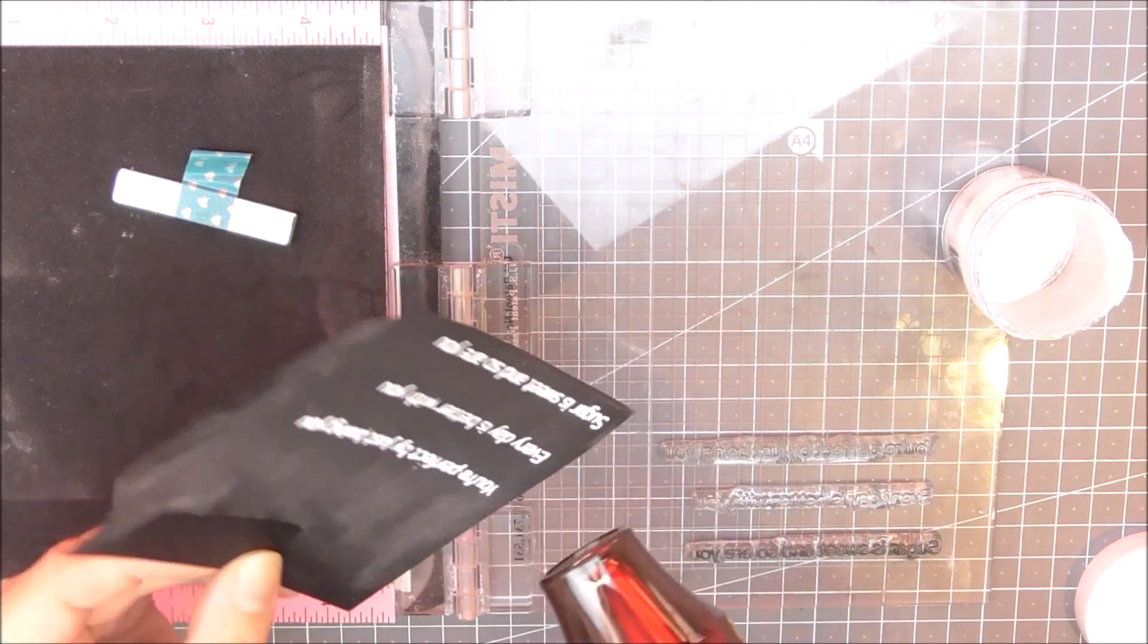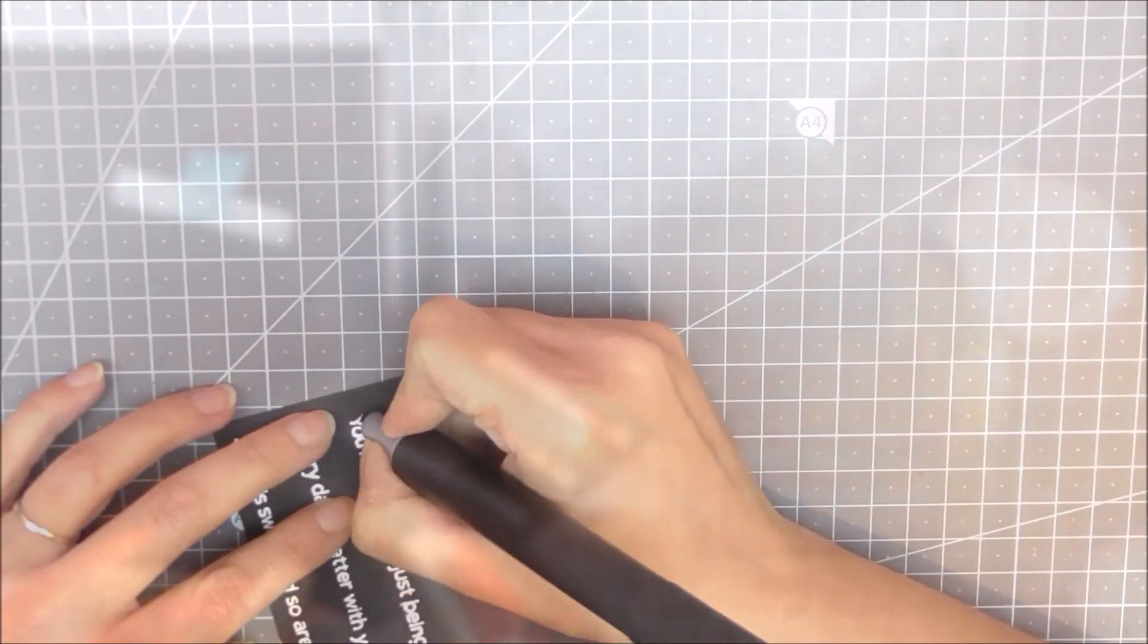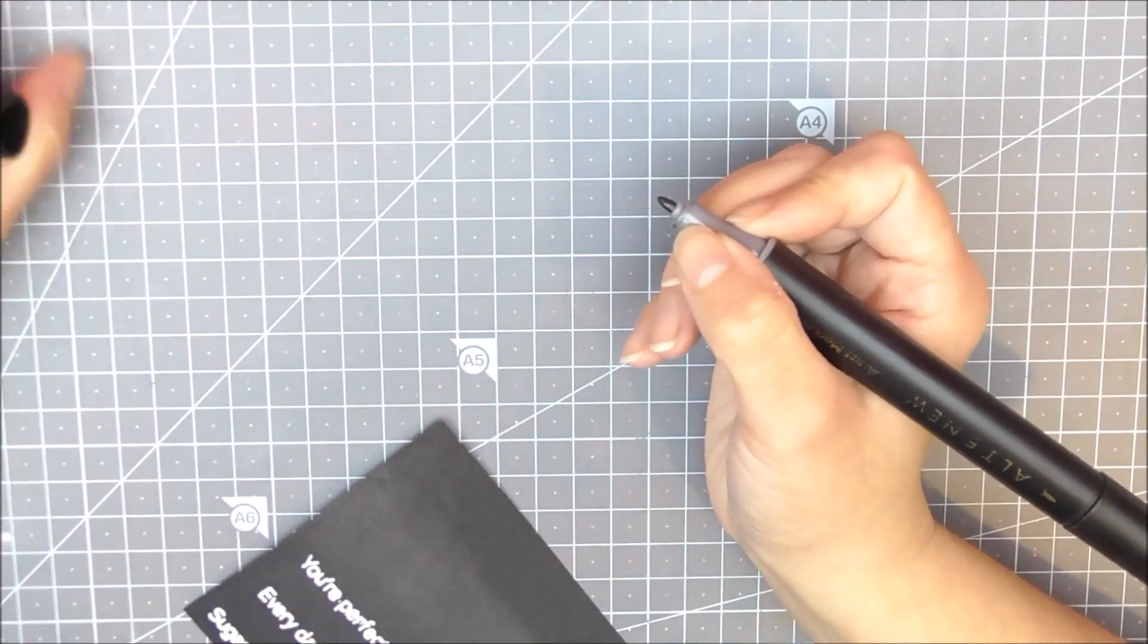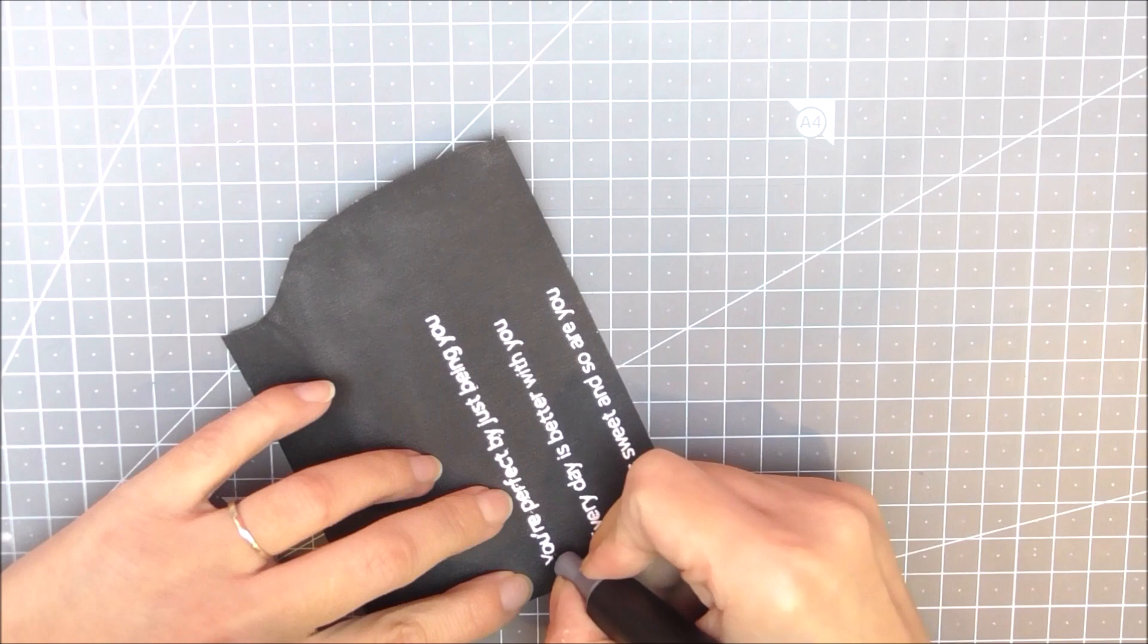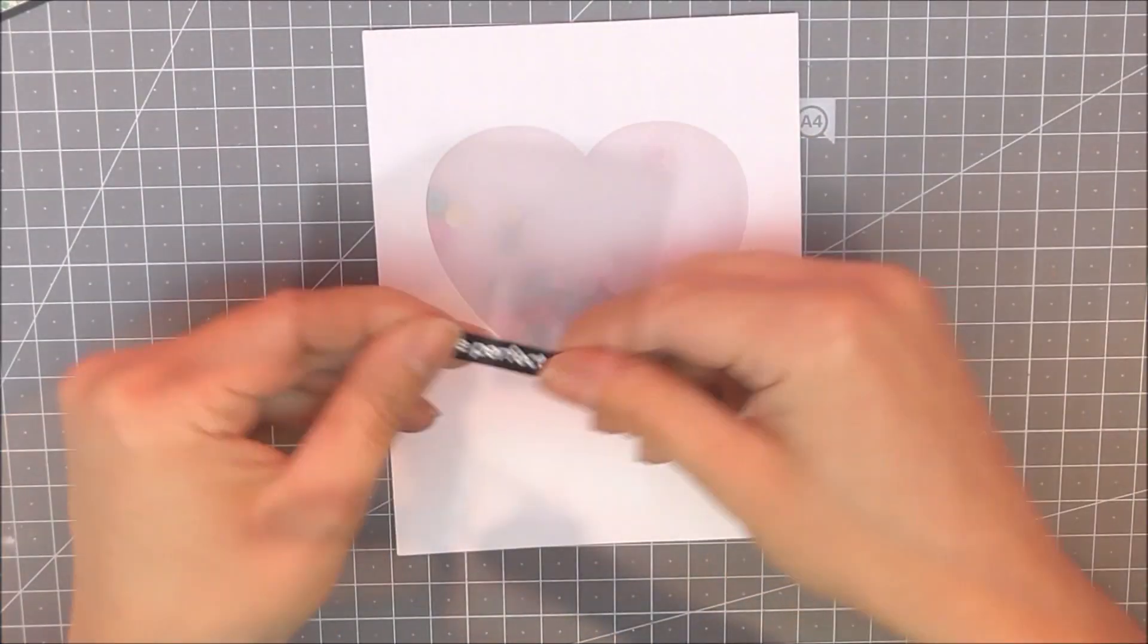Once it was heat set, I did notice there were a couple of white spots where the embossing powder had sat where I didn't want it. To disguise these, I'll take my jet black artist marker and just dab it on the dots that I don't want, and it's going to make them completely disappear.